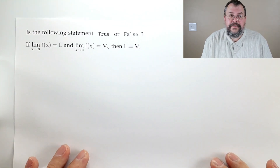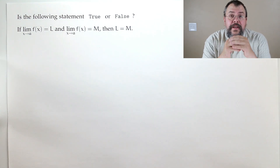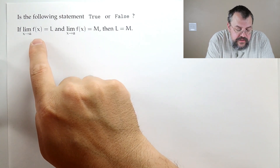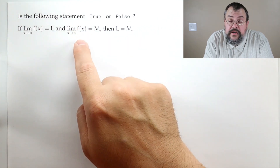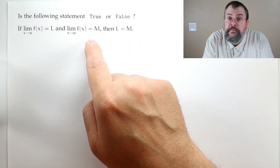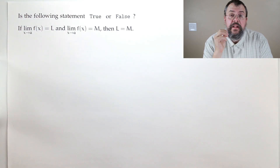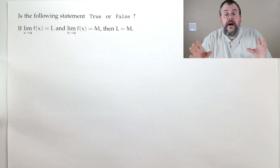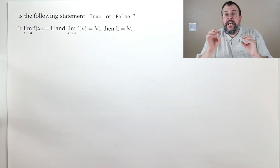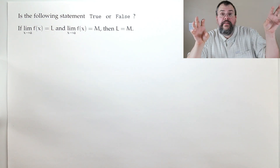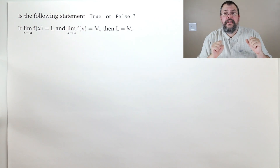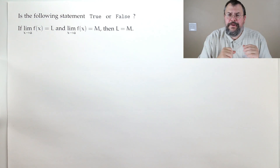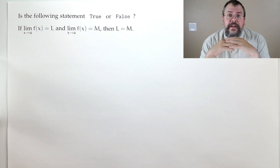Let's tackle a simpler question — hopefully. Is the following statement true or false? Suppose that the limit as x goes to a of f(x) equals L, and also the limit as x goes to a of f(x) equals M. Then it must be the case that L equals M. This is saying: if I approach a value, it's unique — I can't approach two different values simultaneously.